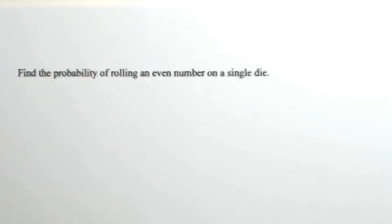Find the probability of rolling an even number on a single die. Anytime you have to find a probability, you're looking for how many ways something can happen out of how many total ways anything can happen. That anything deals with the sample space.